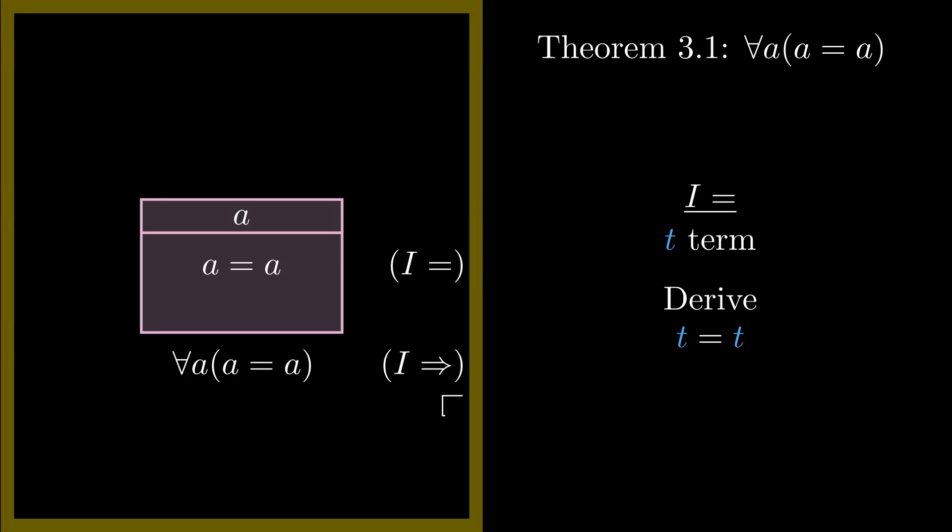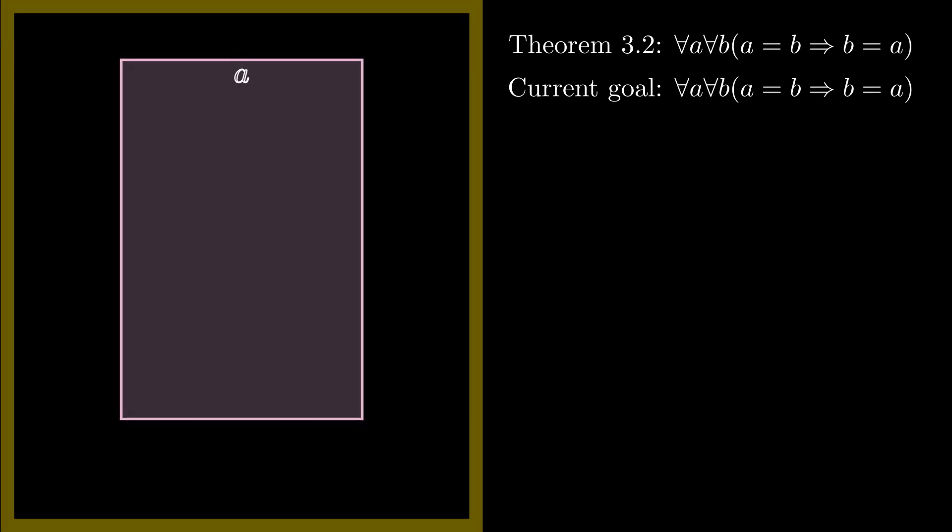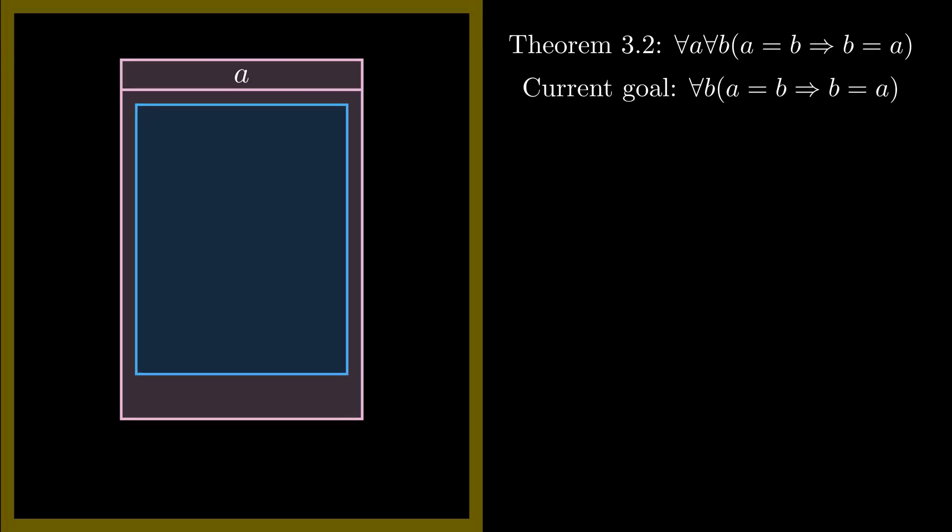We commonly end proofs with a little box like this, or the expression QED, which stands for quod erat demonstrandum, Latin for that which was to be demonstrated. Let's go for something a little more complicated. The next statement we're going to prove is for all a and for all b. If a equals b, then b equals a. This obviously should be true, but we want to prove it using the rules we've seen. This is a sanity check that we haven't forgotten any rules. Again, we want to prove a for all expression, so we draw a box and introduce the variable.